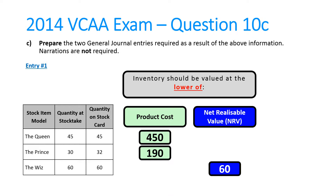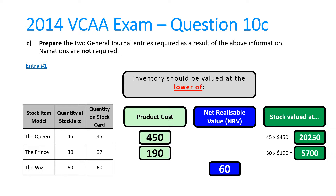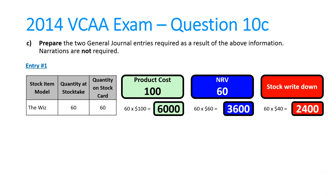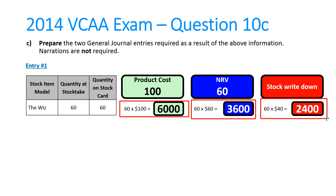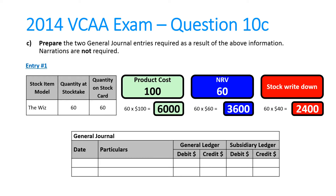The first thing you were asked to do was two general journal entries. The first one is for a stock write-down. In question A you figured out the total value was $29,550. For the model being written down, if there are 60 units at $100 that's $6,000 — that's what they're currently valued at. We need to write them down to 60 units at $60, which is $3,600. That means we write down 60 units at $40 each for a total of $2,400. To do that, debit the expense called stock write-down and credit stock control for the same amount.